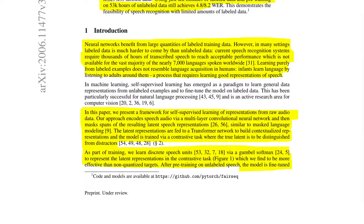In this paper, they present a framework for self-supervised learning of representations from raw audio data. Their approach encodes speech audio via a multi-layer convolutional neural network, then masks spans of the resulting latent speech representations, similar to masked language modeling — basically BERT for audio. The latent representations are fed to a transformer network to build contextualized representations, and the model is trained via a contrastive task where the true latent must be distinguished from distractors. Importantly, they use discrete speech units via Gumbel-softmax to represent the latent representations in the contrastive task, which they find more effective than non-quantized targets.